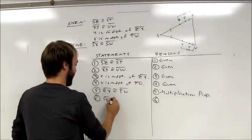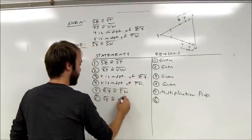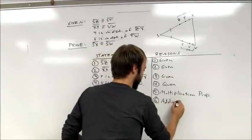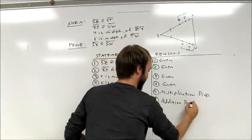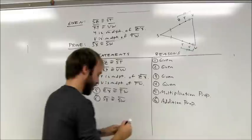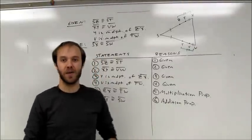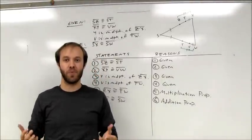So, SX is congruent to SW by the addition property, which states that if congruent segments are added to congruent segments, then the sums are congruent. And at this point, I've finished my proof.